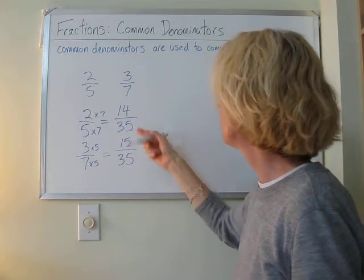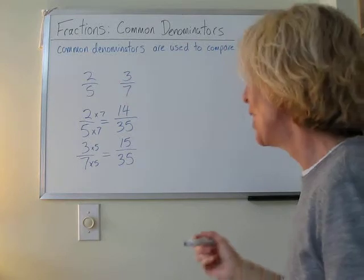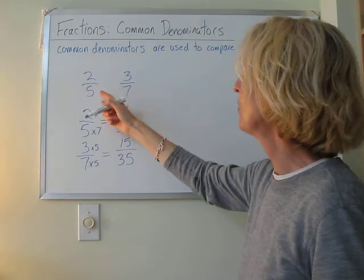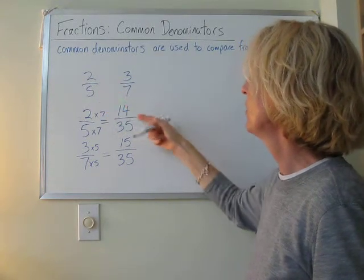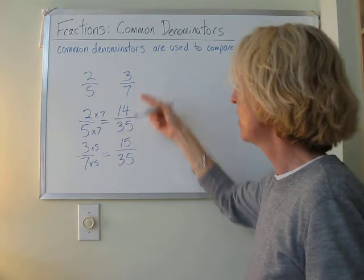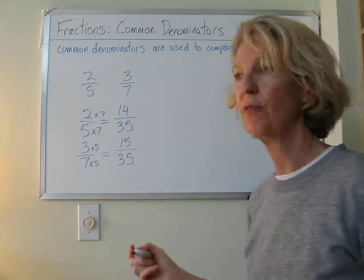Oh, look how close together the fractions are! Okay, now, we've rewritten 2 fifths as 14 over 35, and 3 sevenths as 15 over 35. So, now, we can compare our 2 fractions.